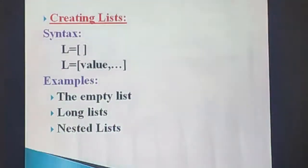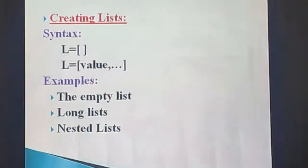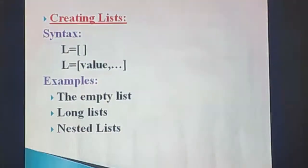Now we are going to see creating a list. How we can create the list? We put many expressions within square brackets. List values are represented within square brackets. The square brackets indicate the starting and ending of the list.